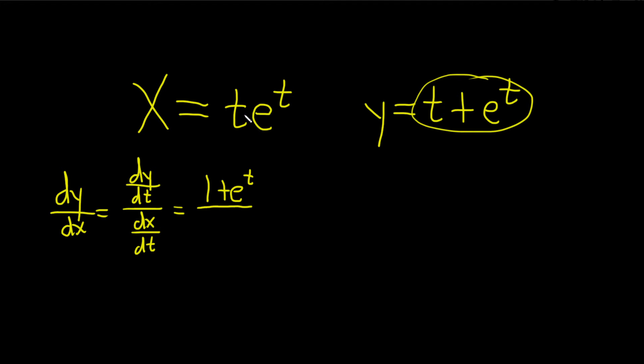Now for dx/dt we have t times e to the t. So we're going to have to use the product rule.